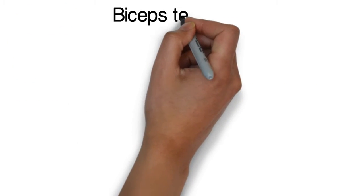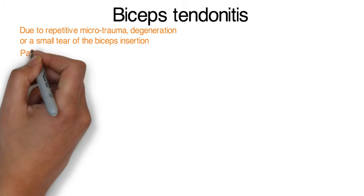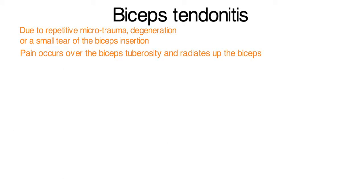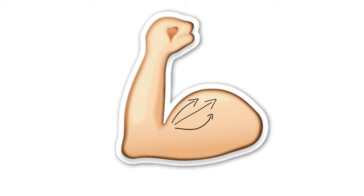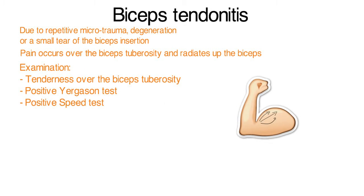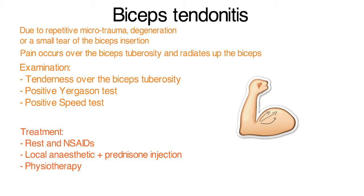Biceps tendonitis occurs due to repetitive microtrauma, degeneration or a small tear, with pain occurring over the biceps tuberosity and radiating up the biceps. On examination, the patient may have tenderness over the biceps tuberosity, a positive Yergeson test and a positive speed test. Conservative and medical treatment options are recommended.